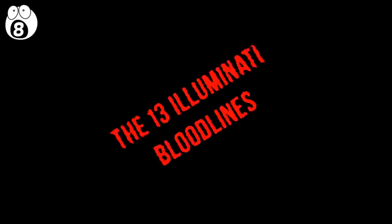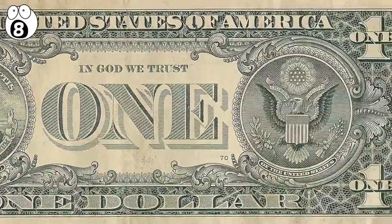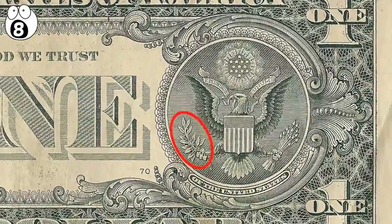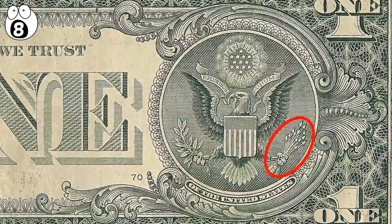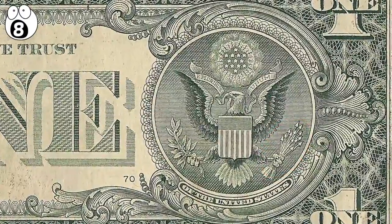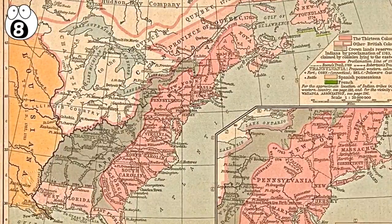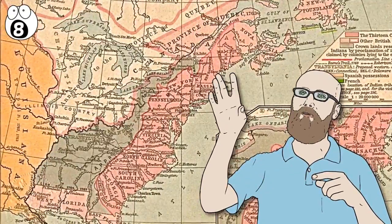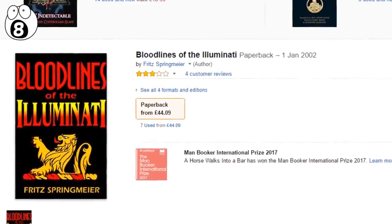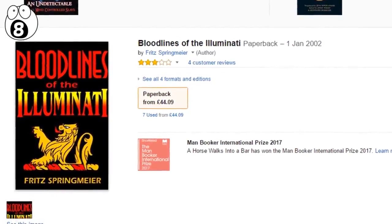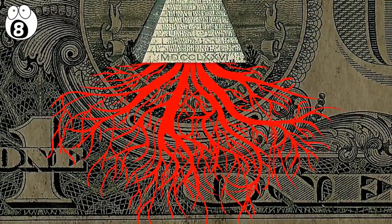Number 8: The 13 Illuminati bloodlines. The $1 bill has many depictions of the number 13 on the back of it: 13 leaves in the olive branch, 13 bars and stripes on the shield, and 13 arrows in the eagle's right talon, among others. But apparently these images have nothing to do with the original 13 colonies that rebelled from the British and formed the United States of America, as those pesky historians claim. Their presence is much more malevolent. In Fritz Springmeier's book, Bloodlines of the Illuminati, he explains that the number 13 on the $1 bill actually represents the 13 bloodlines that make up the families of the Illuminati.